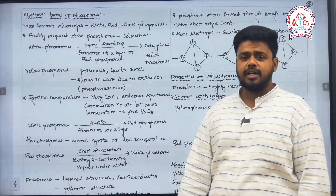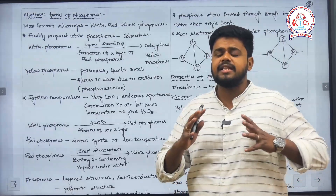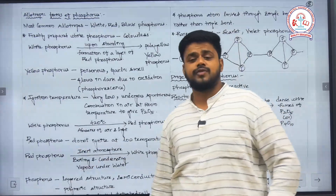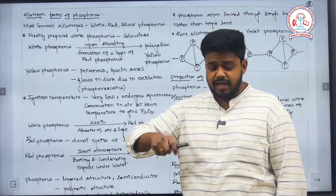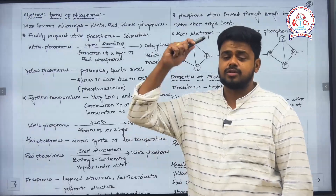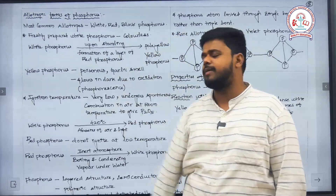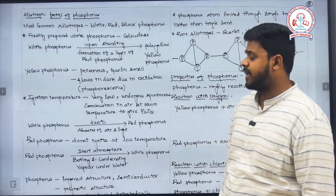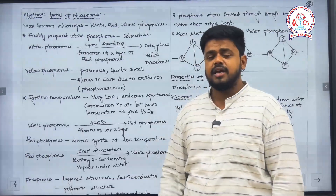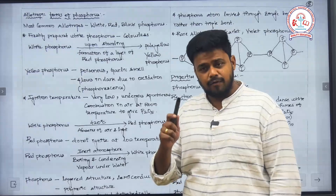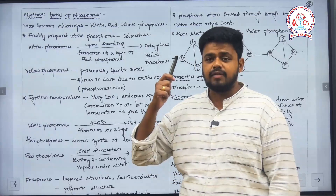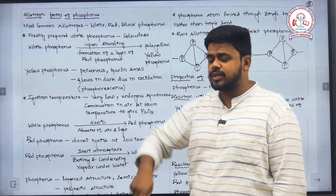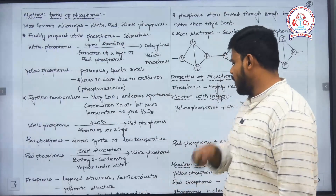Red phosphorus can be converted back into white phosphorus by maintaining an inert atmosphere. You heat the red phosphorus, it converts into vapor, and then you condense the vapor to get white phosphorus. So if you have red phosphorus in an inert atmosphere, you boil it, convert it into vapor, and then condense that vapor back to white phosphorus.